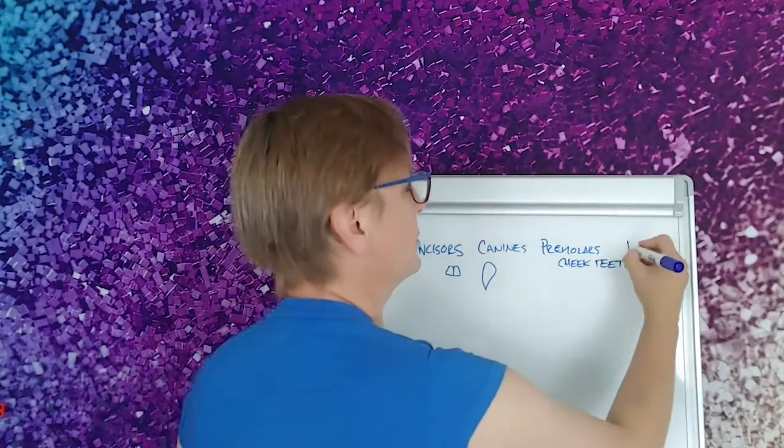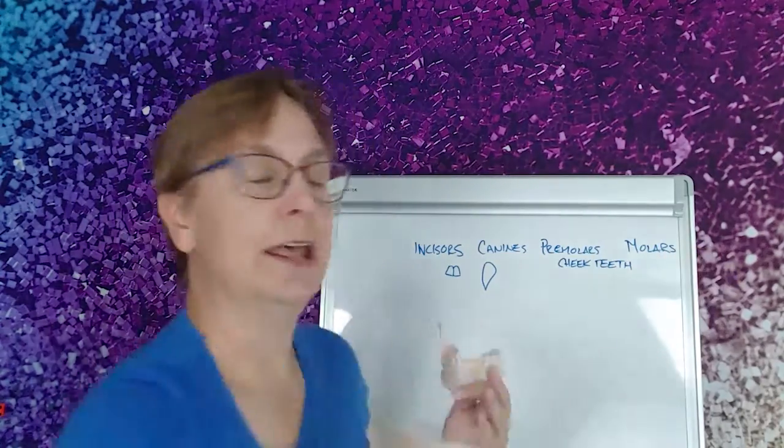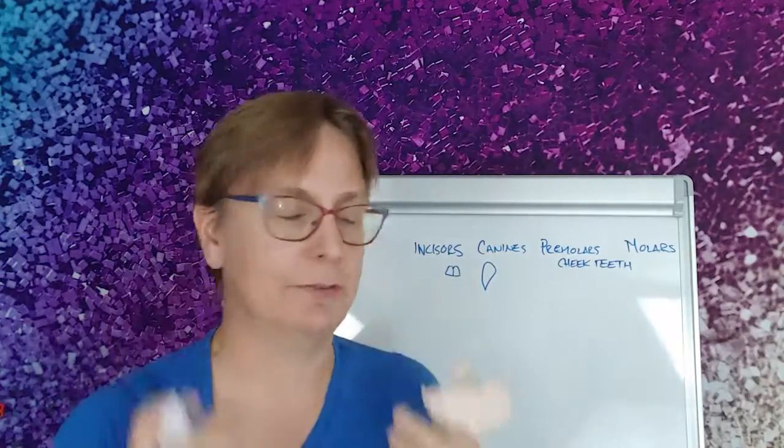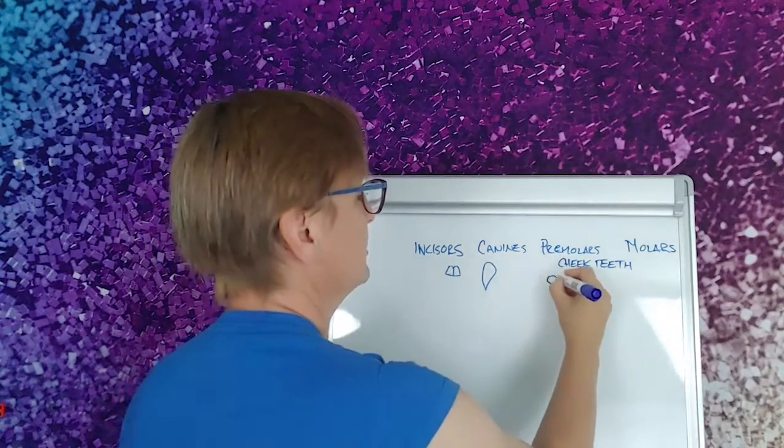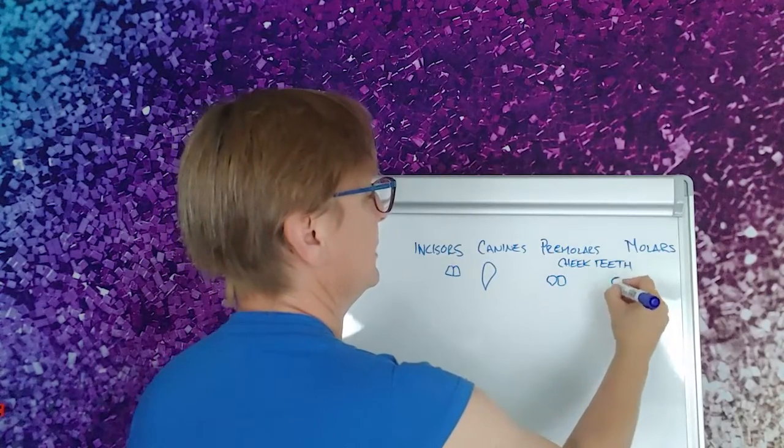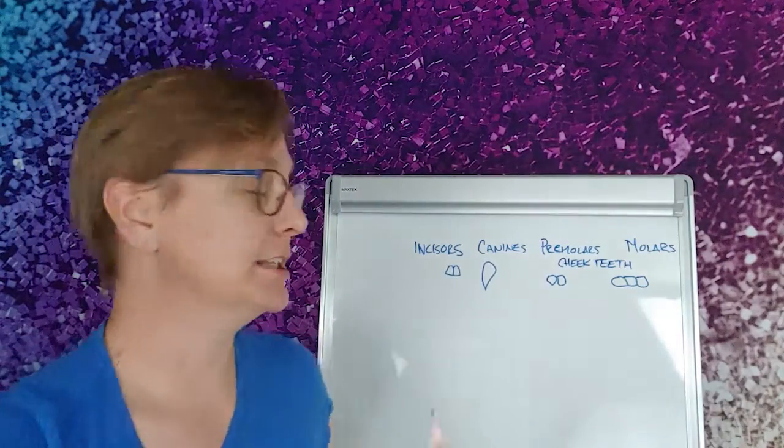And then there are the molars. And those are the big permanent ones that we have in the back. So we have premolars and then we have big chonky molars. So we have four different kinds of teeth.